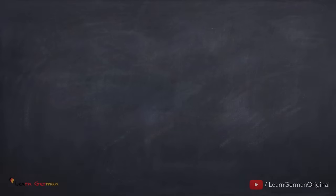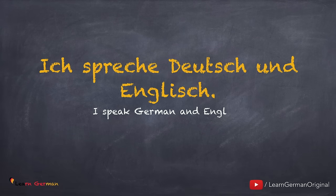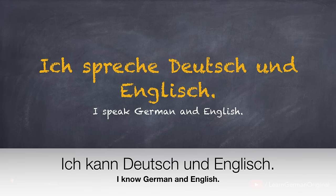Here's the next one: Ich spreche Deutsch und Englisch. Noch einmal. Ich spreche Deutsch und Englisch. This one should sound familiar to you as you have done this in Lesson 2 Common Phrases. You can replace with the languages that you can speak. You can also say Ich kann Deutsch und Englisch. Noch einmal. Ich kann Deutsch und Englisch.